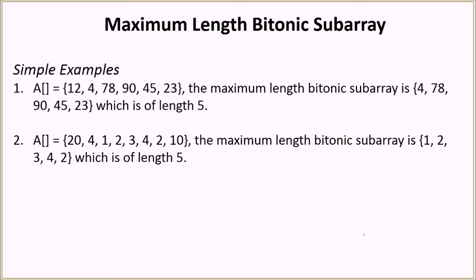Let's look at a few examples. For the first array, the maximum length bitonic subarray has length 5: the elements are 4, 78, 90, 45, and 23. Starting from 4, the values increase to 78 and then 90. After 90 the elements decrease — 45 is smaller than 90, and 23 is smaller than 45. So this is the maximum length bitonic subarray.